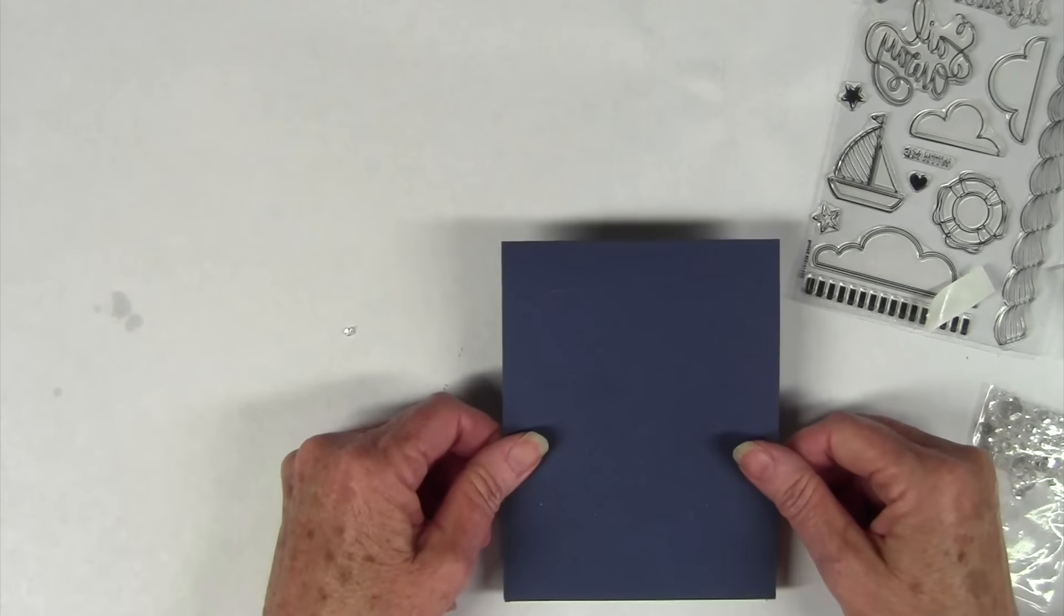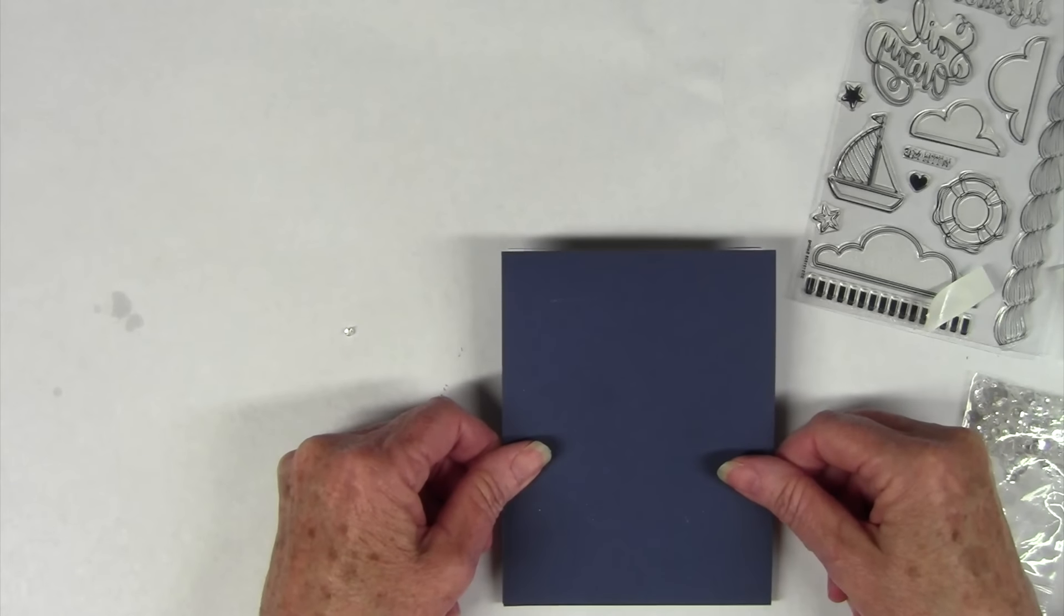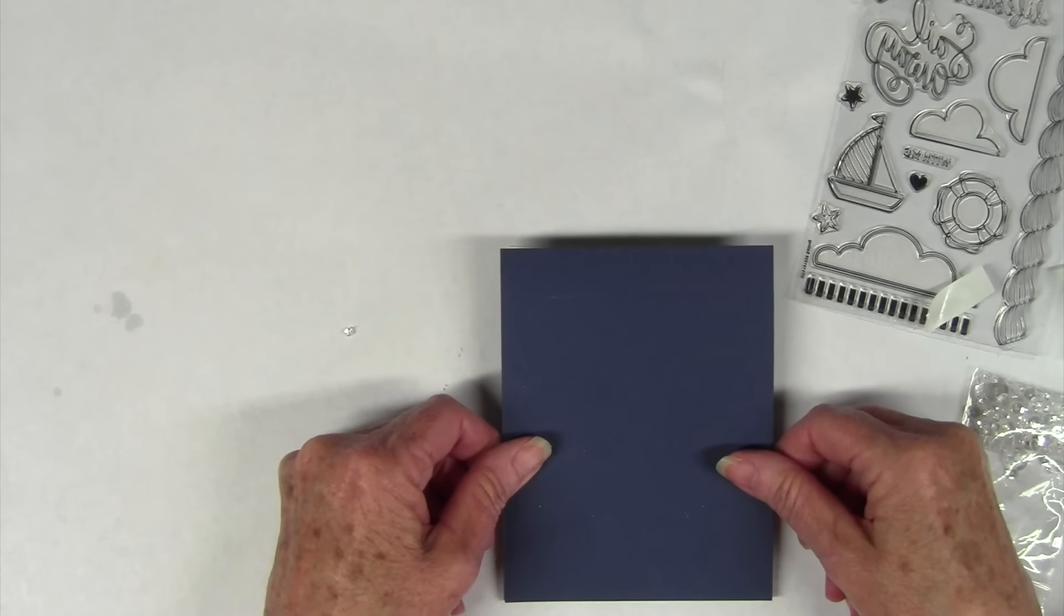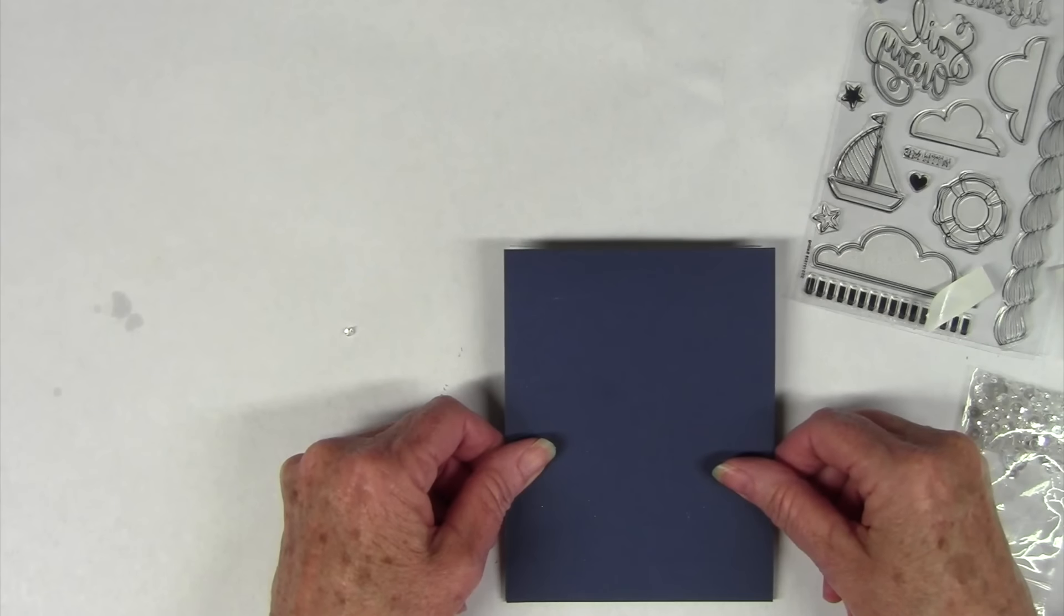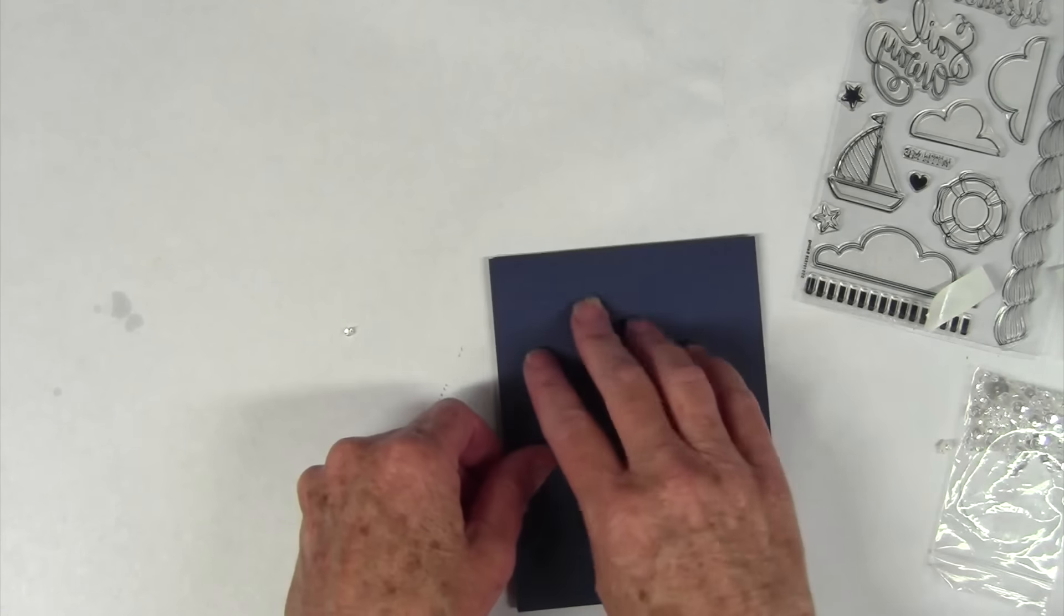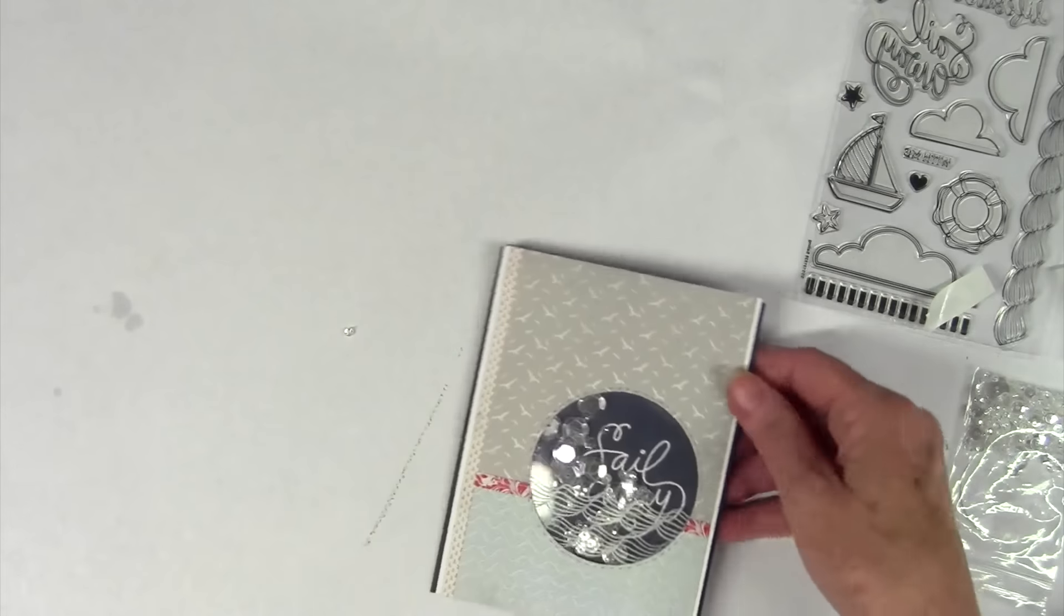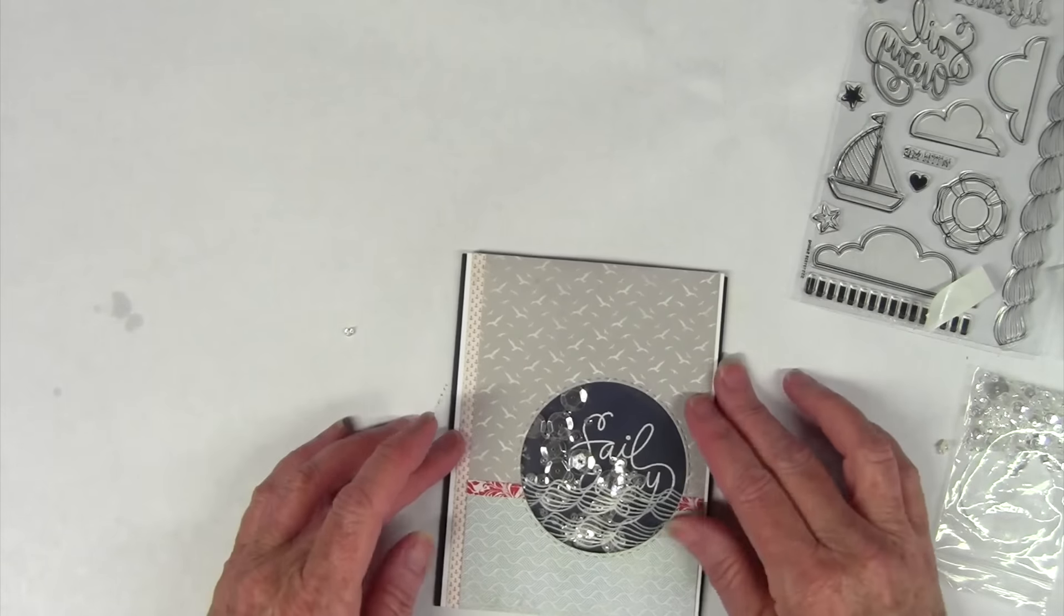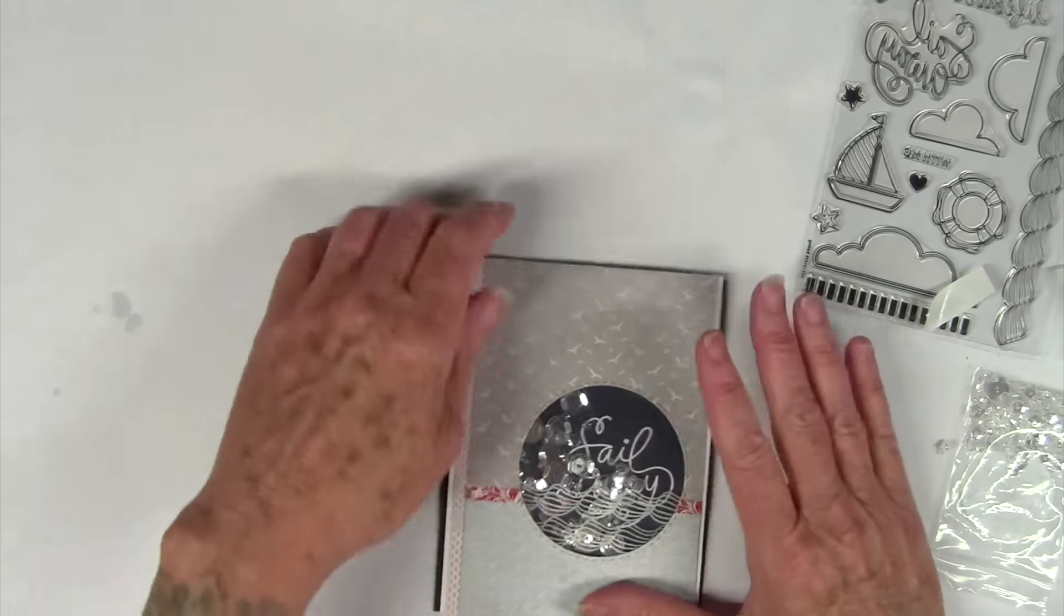To finish off the shaker portion I'm going to lay my note card right on top. I'm going to be really careful to line this up since I have all of my foam tape exposed. I've pulled off all the backing. Once I have that lined up I can press that down and when I turn that over you can see how really easy it is to make a shaker card.